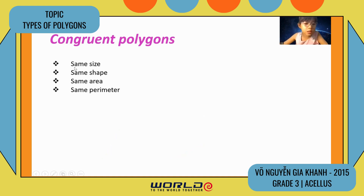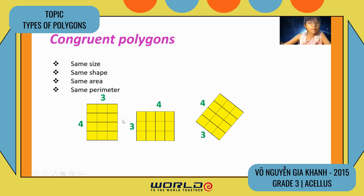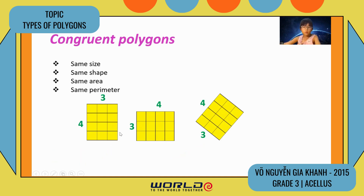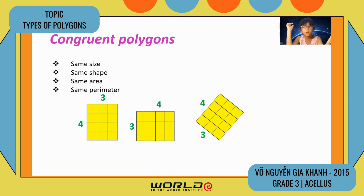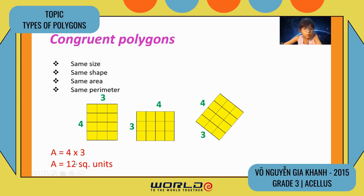Congruent polygons need the same size, same shape, same area, and same perimeter. Look — these look different, they can appear in different orientations like this, this, and this, but they are still rectangles, so they are congruent. Congruent polygons don't need to be stacked the same way — they can be left, right, or straight. For example, area is four times three equals 12 square units, and perimeter is four plus three plus four plus three equals 14 units.